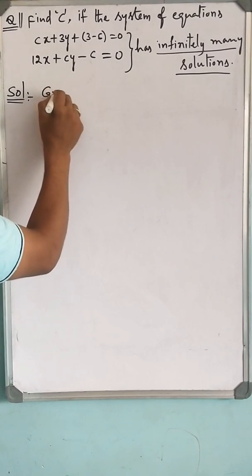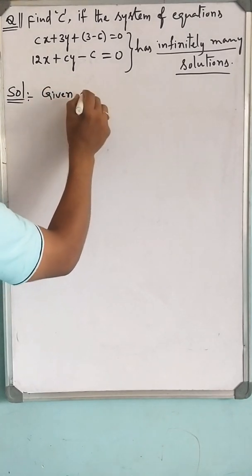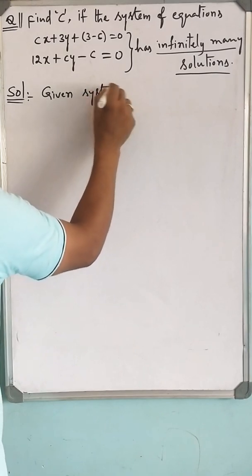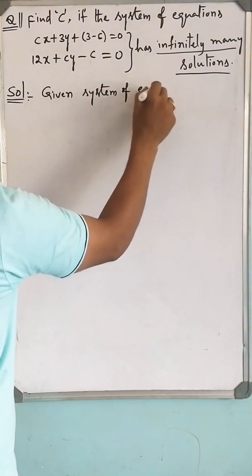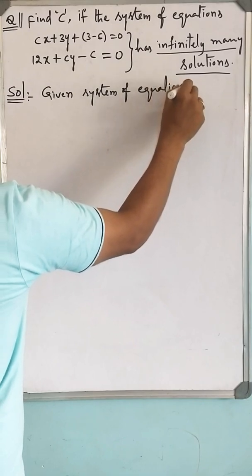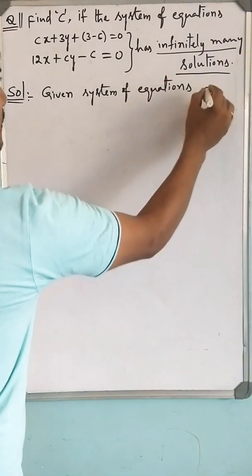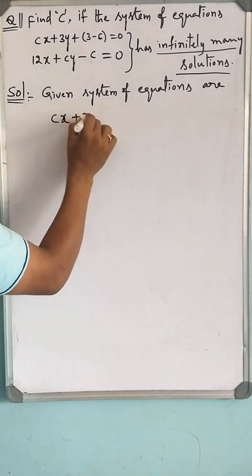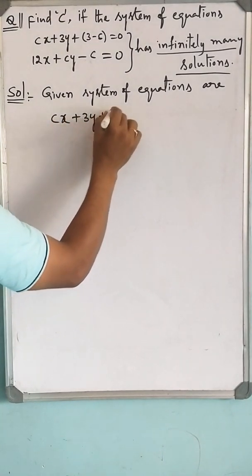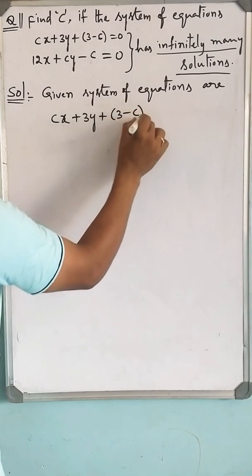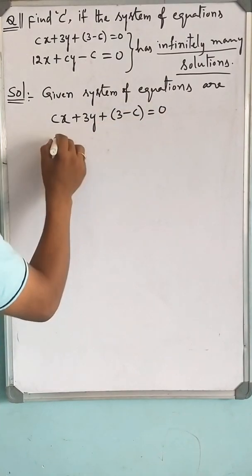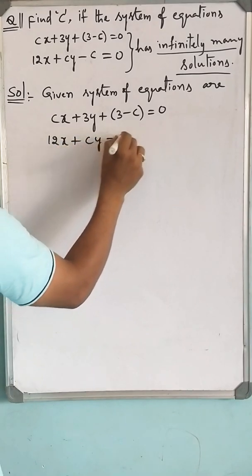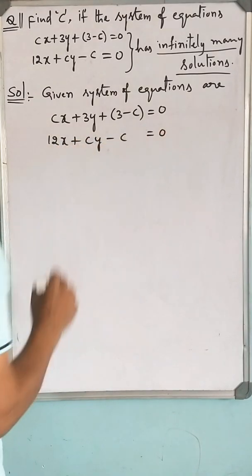Cx plus 3y plus 3 minus C equals 0, 12x plus Cy minus C equals 0.